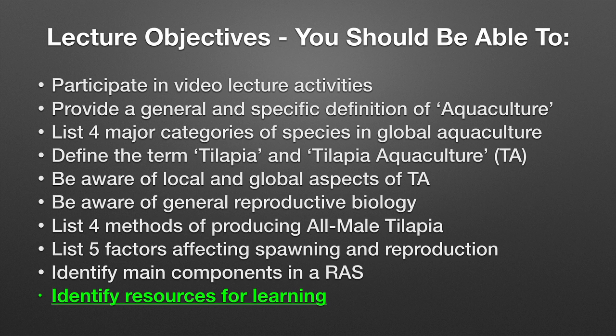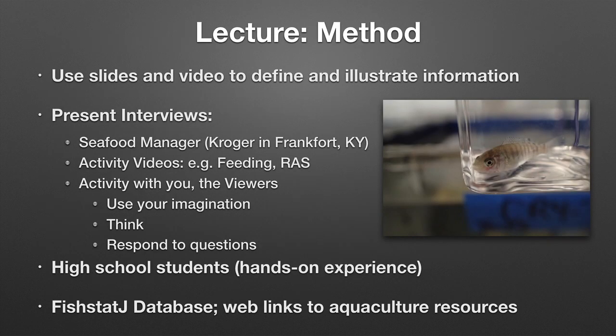Additional objectives include listing four methods of producing all-male tilapia, listing five factors affecting spawning and reproduction, identifying main components in a recirculating aquaculture system, and using internet resources for learning. We plan to achieve this using slides, videos, interviews with a seafood manager from Kroger in Frankfort, Kentucky, video activities on feeding and recirculating systems, and high school students who worked in our genetics and reproduction lab.